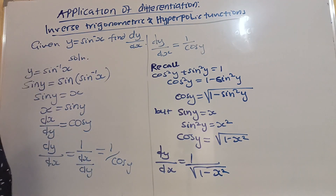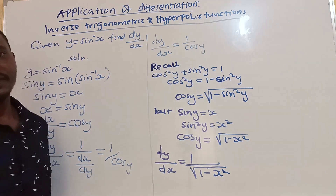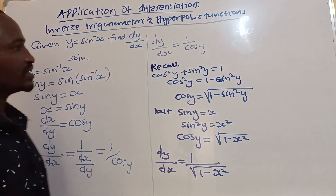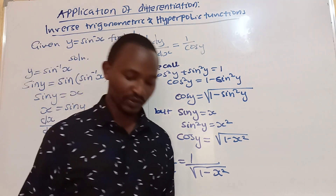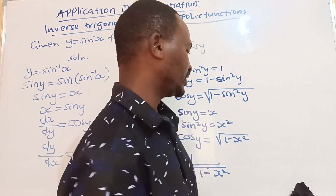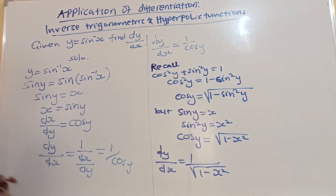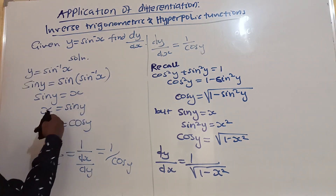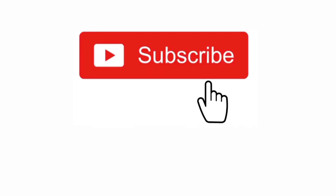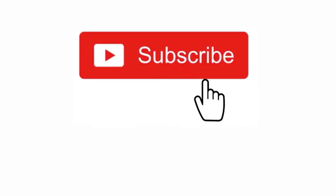So that's how we find the value of dy/dx. That is it. Now let us find the derivative of cos inverse x.